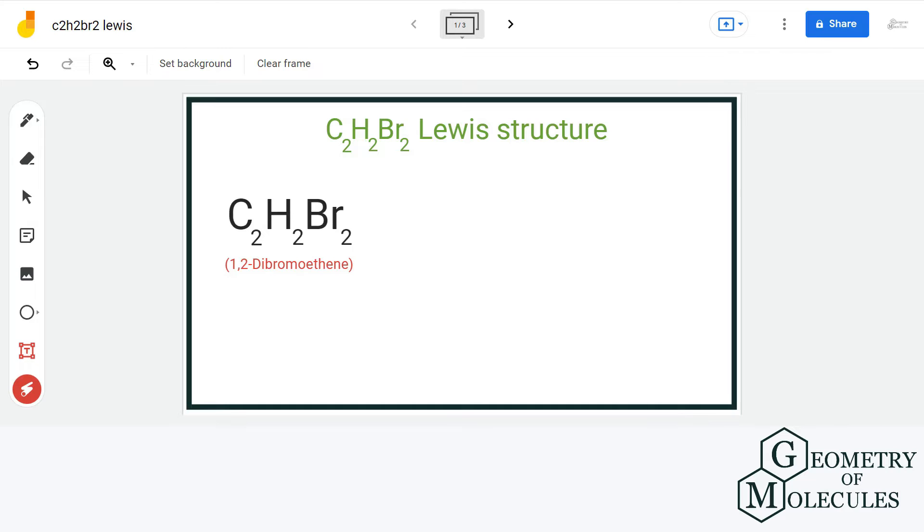Hello guys, welcome back to our channel. In this video, we will discuss the Lewis structure of C2H2Br2 which is a chemical formula of 1,2-dibromoethane.